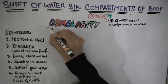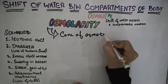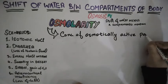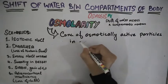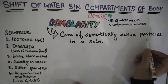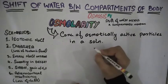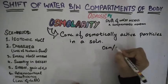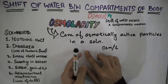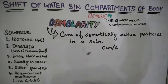Osmolarity is defined as the concentration of osmotically active particles in a solution. It is expressed in osmoles per liter. For example, one molecule of sodium chloride has two atoms — sodium and chloride — which are bounded by ionic bond.